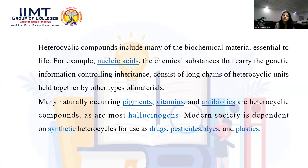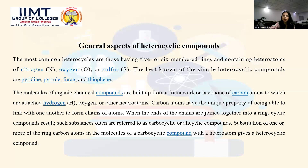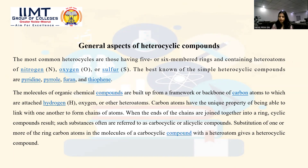In heterocyclic compounds, there can be a number of chains involved — it can be a three-carbon ring or up to a ten-carbon ring. We can increase the ring size as needed; the compound structure will change accordingly. The most commonly known heterocyclic compounds are five- or six-membered ring compounds containing nitrogen, oxygen, sulfur, or phosphorus.